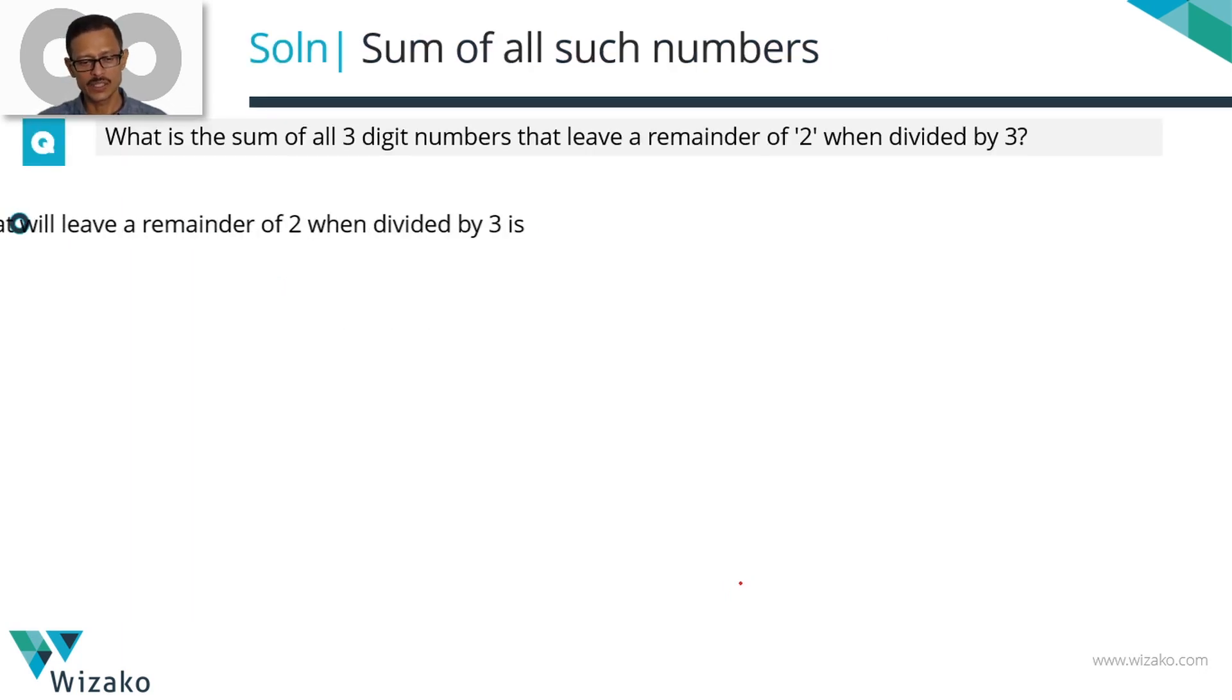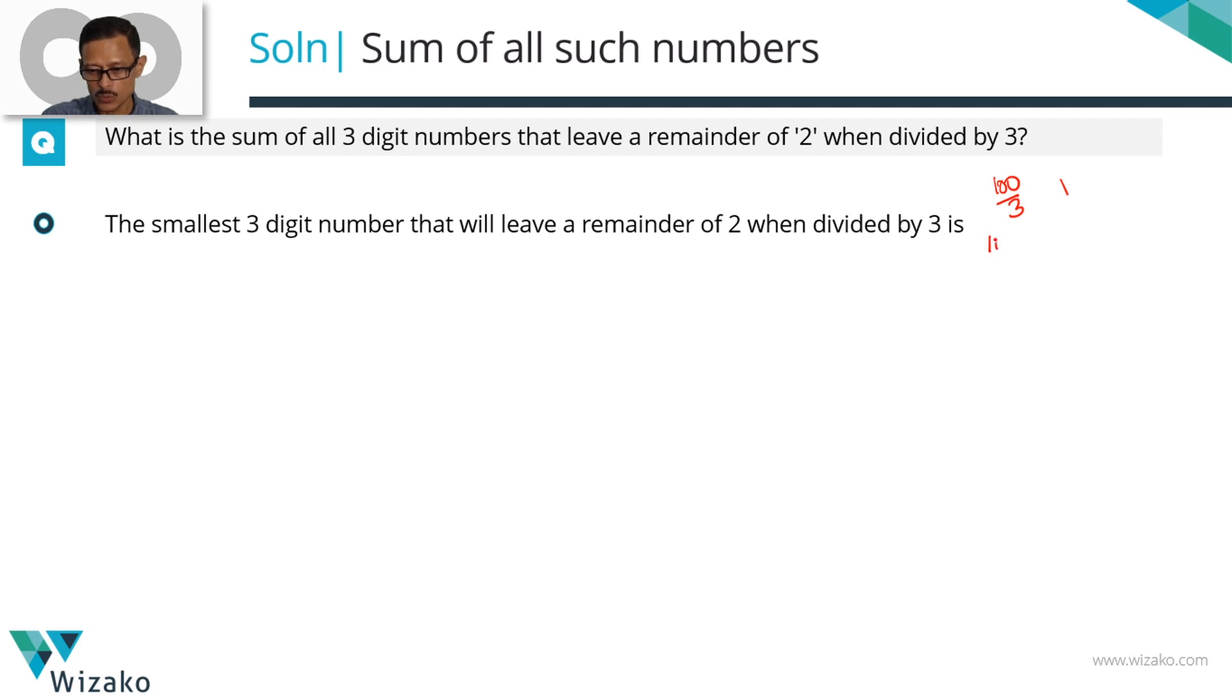What is the first number in this sequence? The smallest three-digit number is 100. When 100 is divided by 3, the remainder is 1 because 99 is divisible by 3. If the number should leave a remainder of 2, the number next to 100 is going to be the first number of the sequence. So 101 is the first number in this sequence.